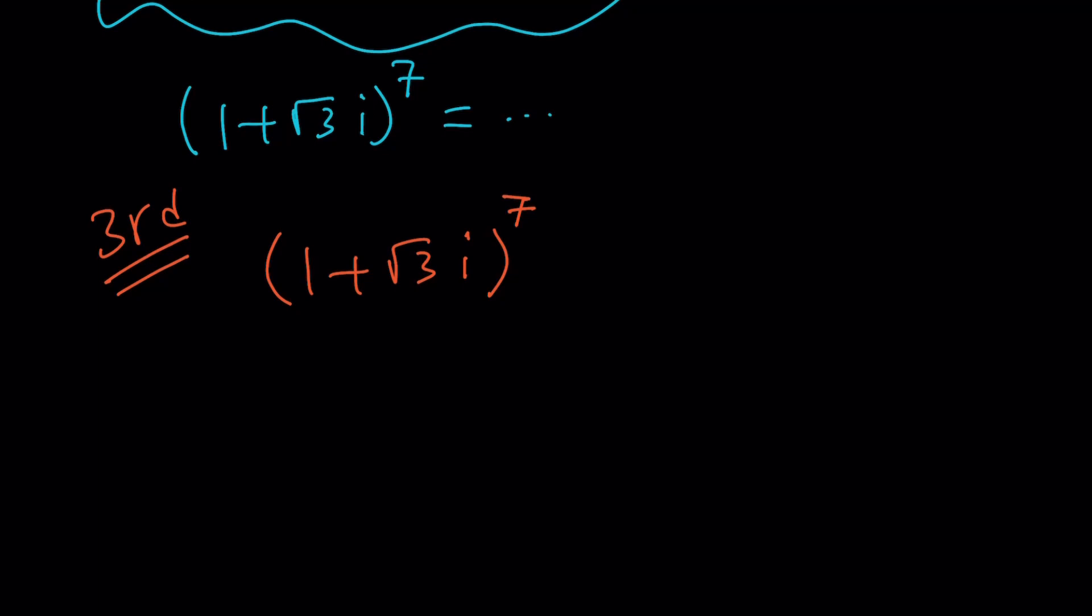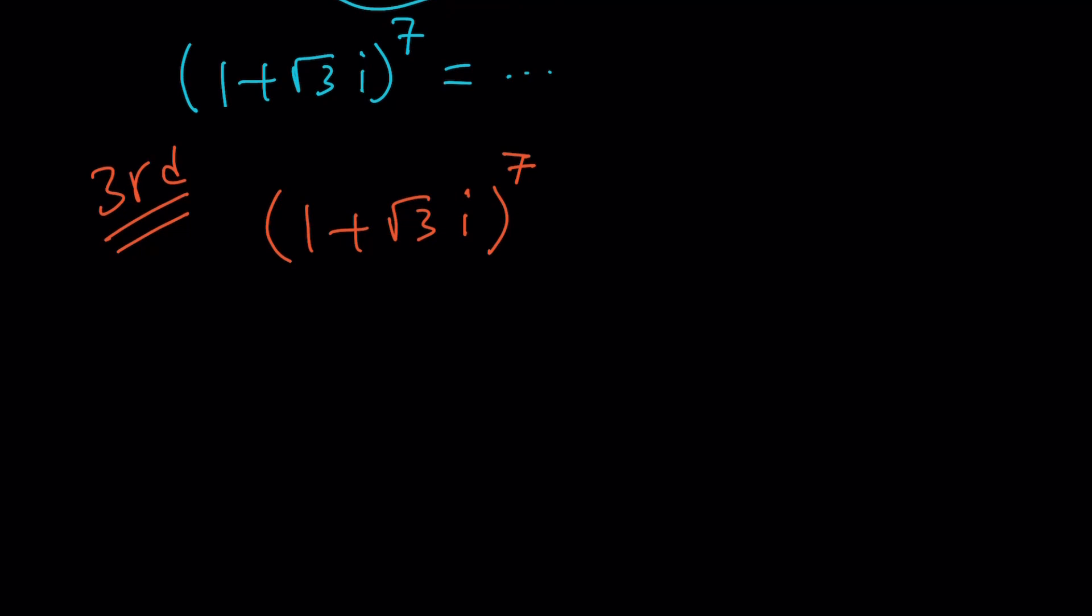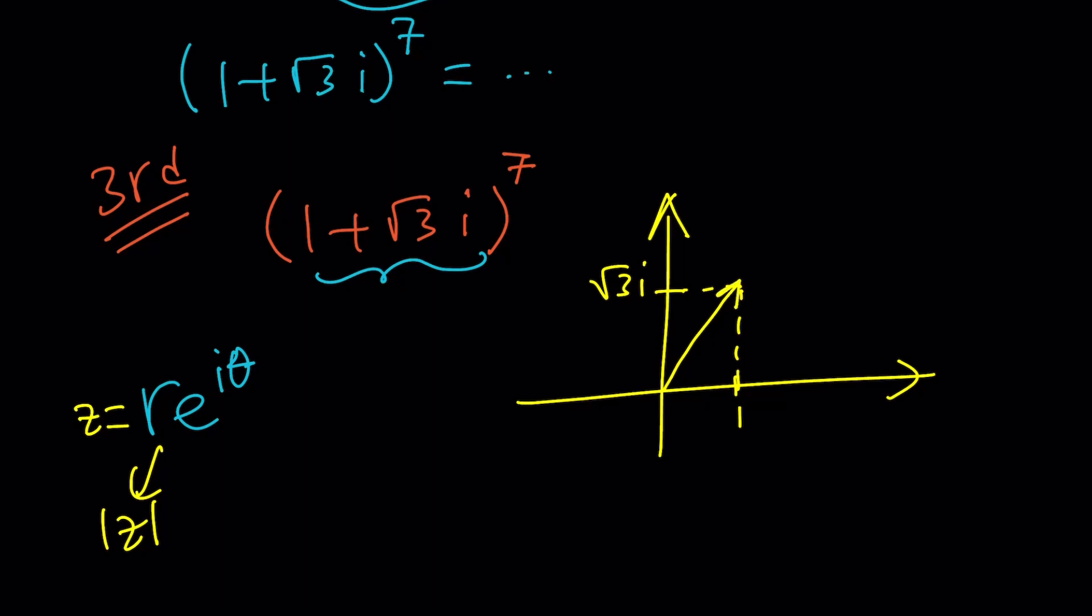We can go ahead and remember, we talked about this in lecture videos. We can write this in R times E to the I theta form. R is the modulus or the absolute value of Z, if this is Z by the way, and theta is the angle. So whenever you graph a complex number on the complex plane, you get two coordinates, the X coordinate and the Y coordinate. In this case, it happens to be like one unit here and root three units. Some people write this as root three I.